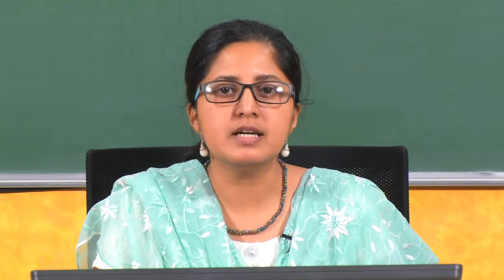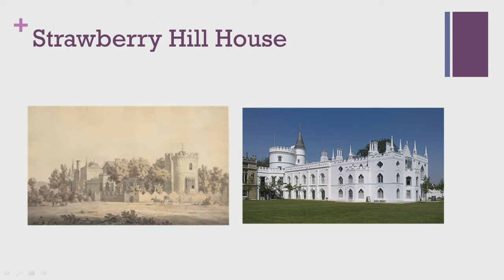This interest in romance and the middle ages, and the fascination about ancient, primitive, and magical elements, began to introduce a new kind of genre in the later 18th century. One of the most important figures here is Horace Walpole, who was really fascinated with medieval history. He even went to the extent of building a fake gothic castle which he named Strawberry Hill House — initially a small cottage on lease which he later rebuilt as a gothic castle, even recreated as recently as 2012.